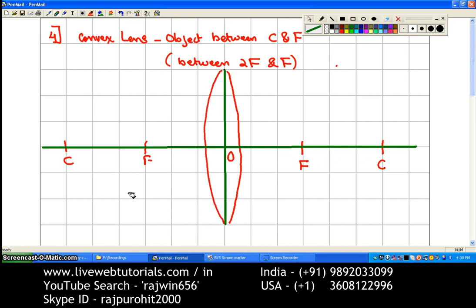The next thing is the position of the object. The object is between center of curvature and focus. Same precaution: you don't place the object very close to F, otherwise the image will go out of the page. So I'm keeping this as the position of the object; I will mark this as AB.